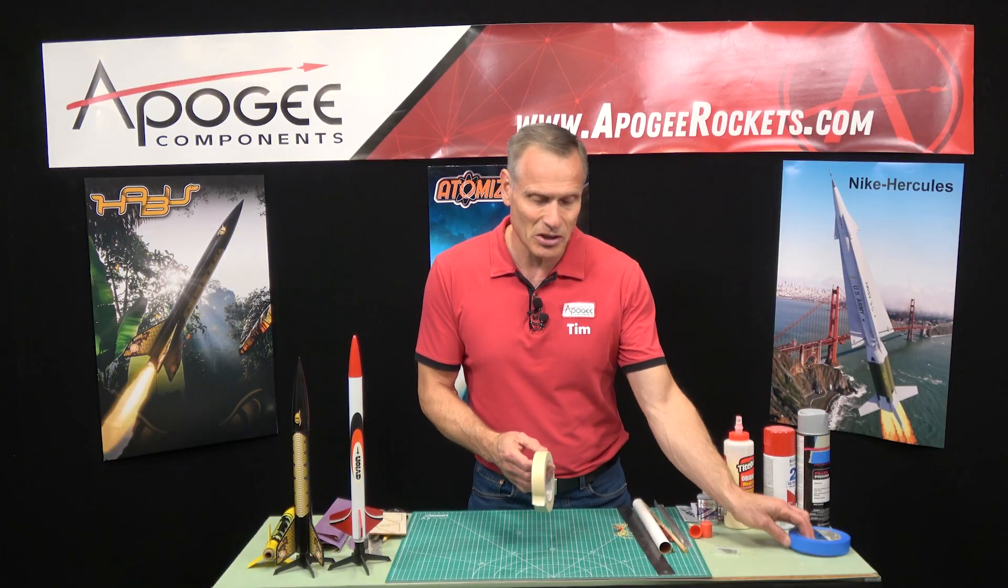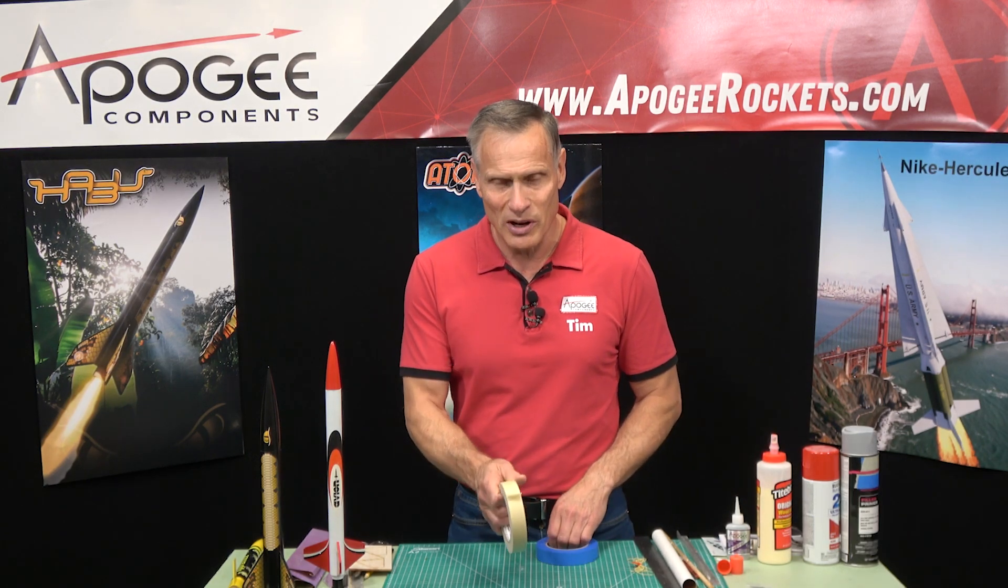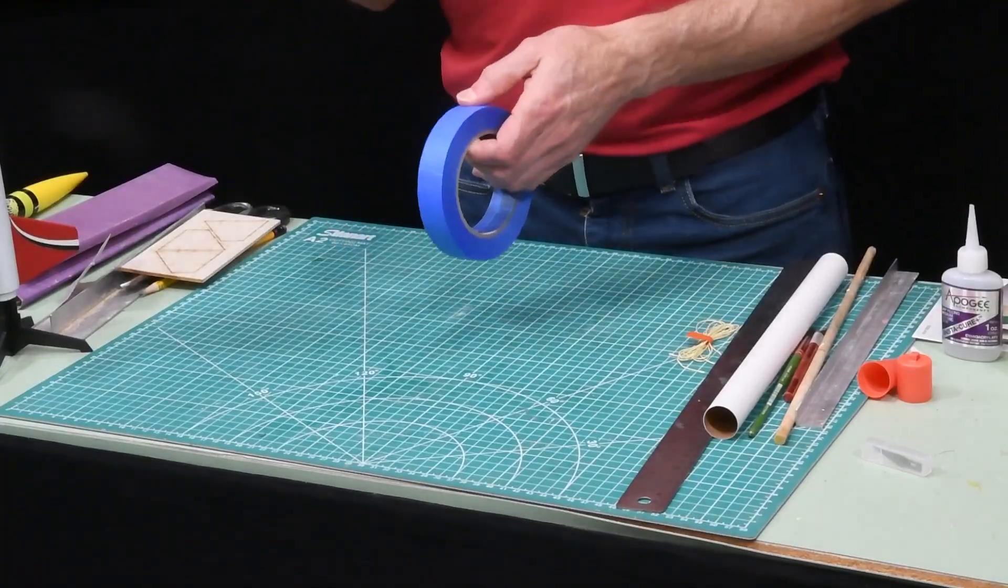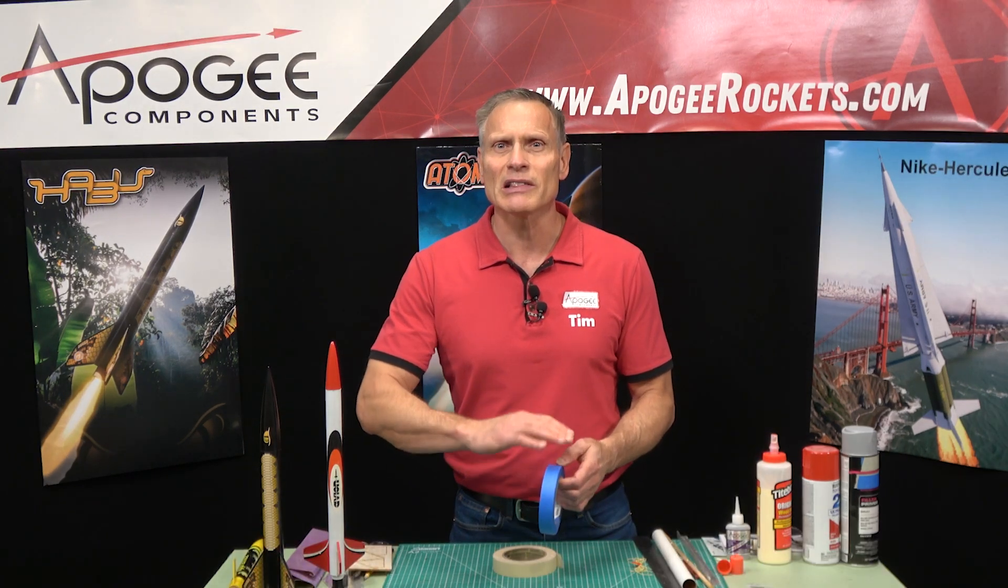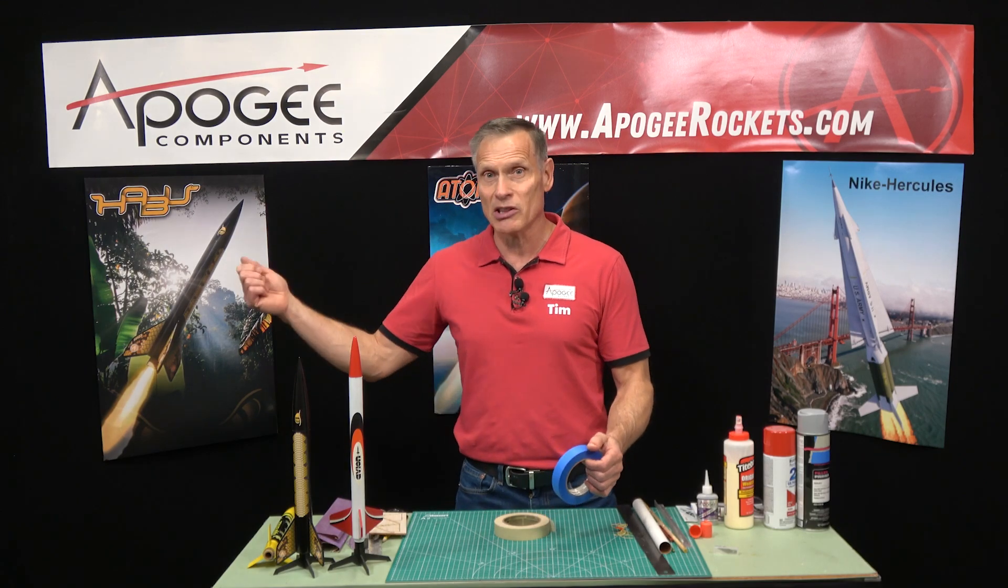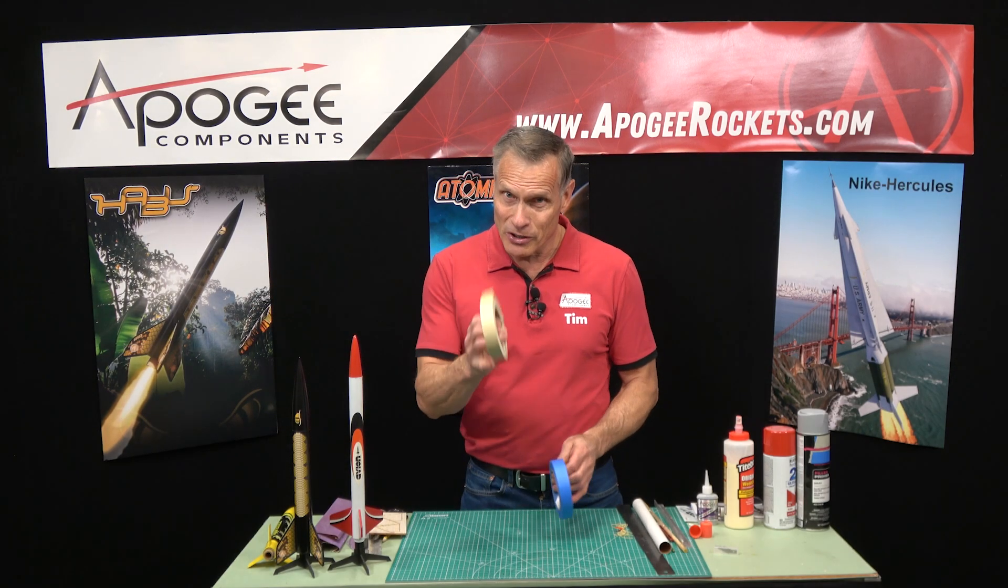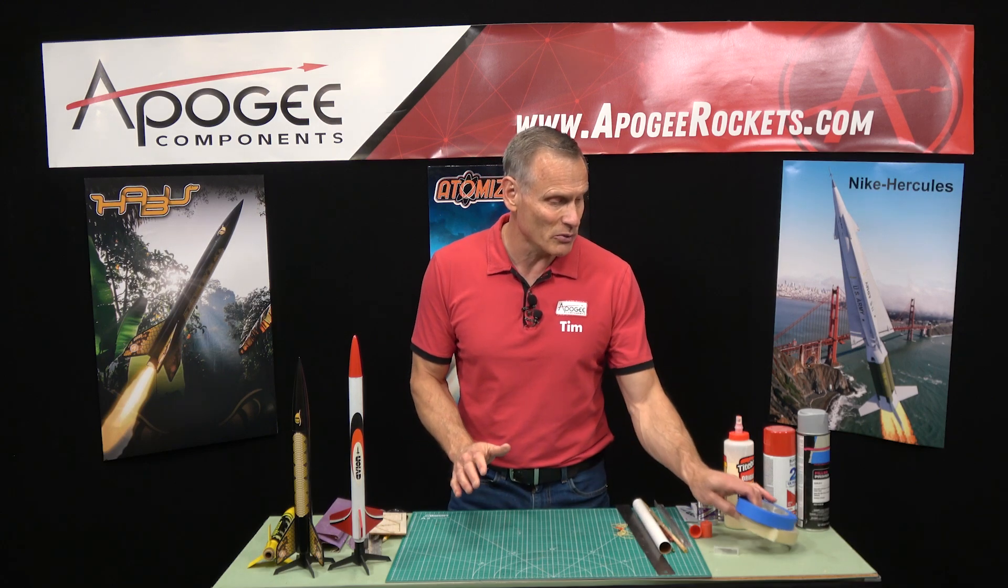We'll also need some masking tape. Just your generic tape for a skill level one rocket. The blue tape, the difference between regular masking tape and the blue tape is the blue tape has a little bit less adhesive on it. So it's meant for ripping off really quick without yanking the paint off underneath. But you can get away with regular masking tape. Don't worry about it for skill level one rocket.